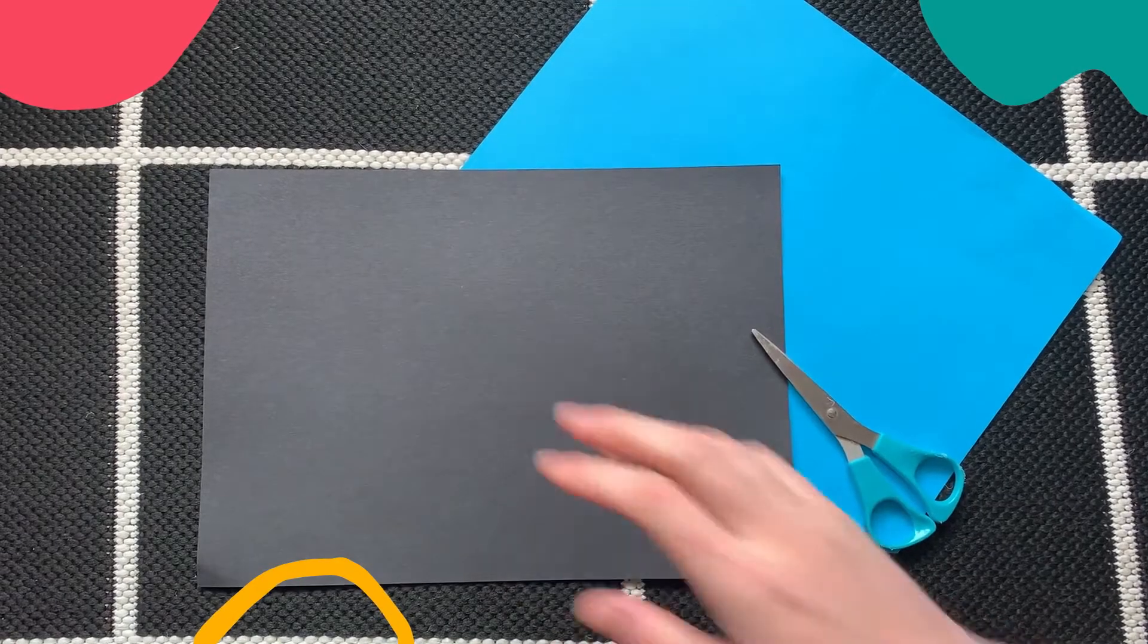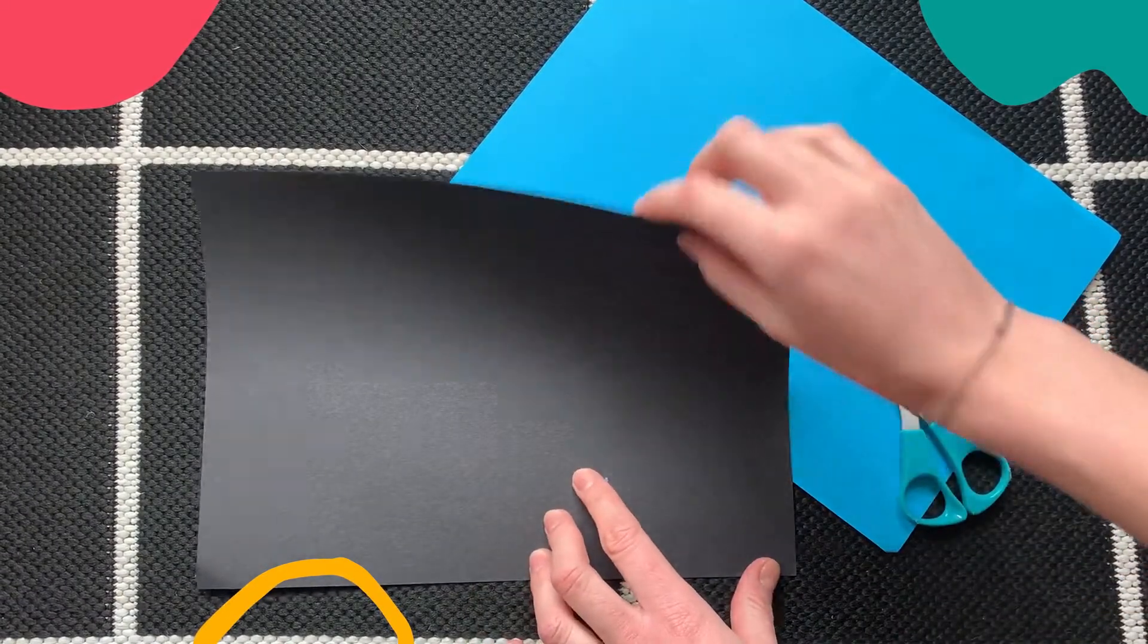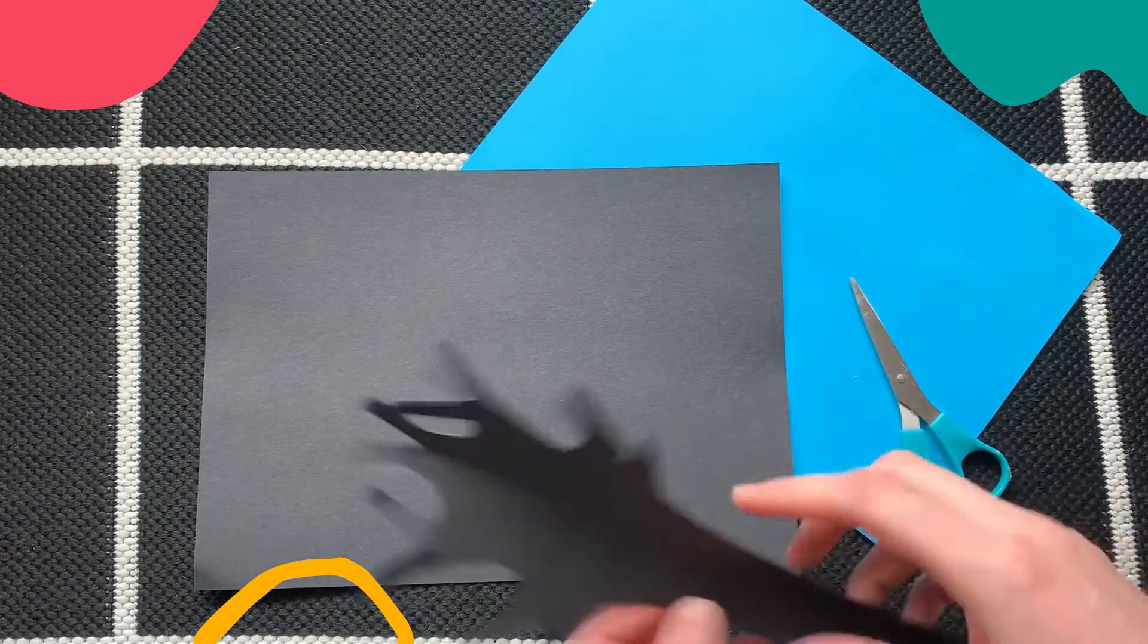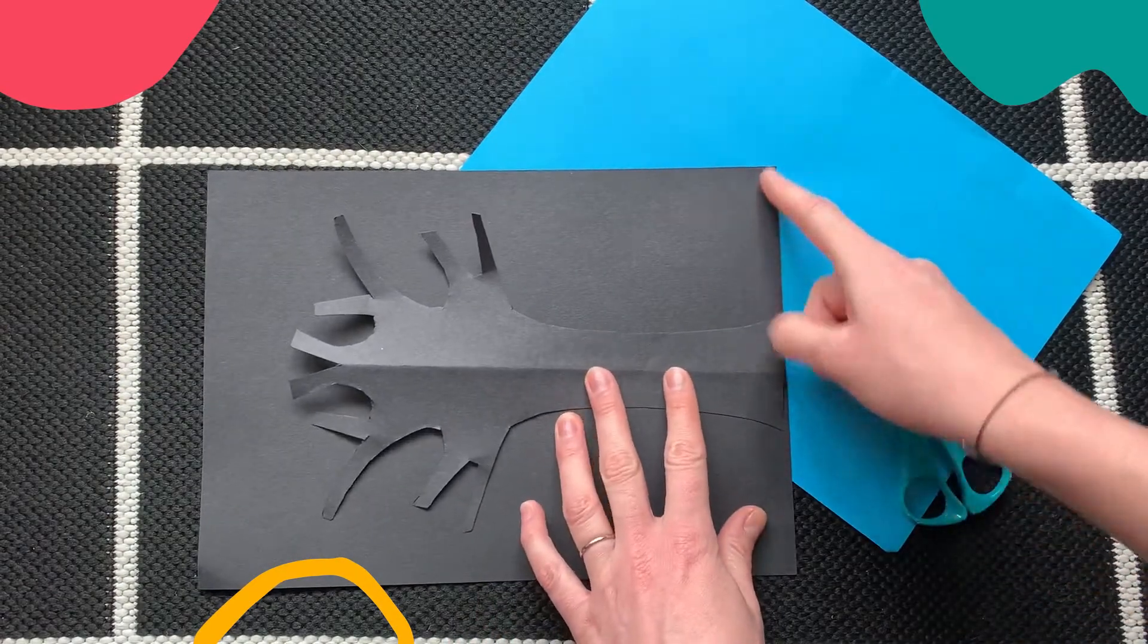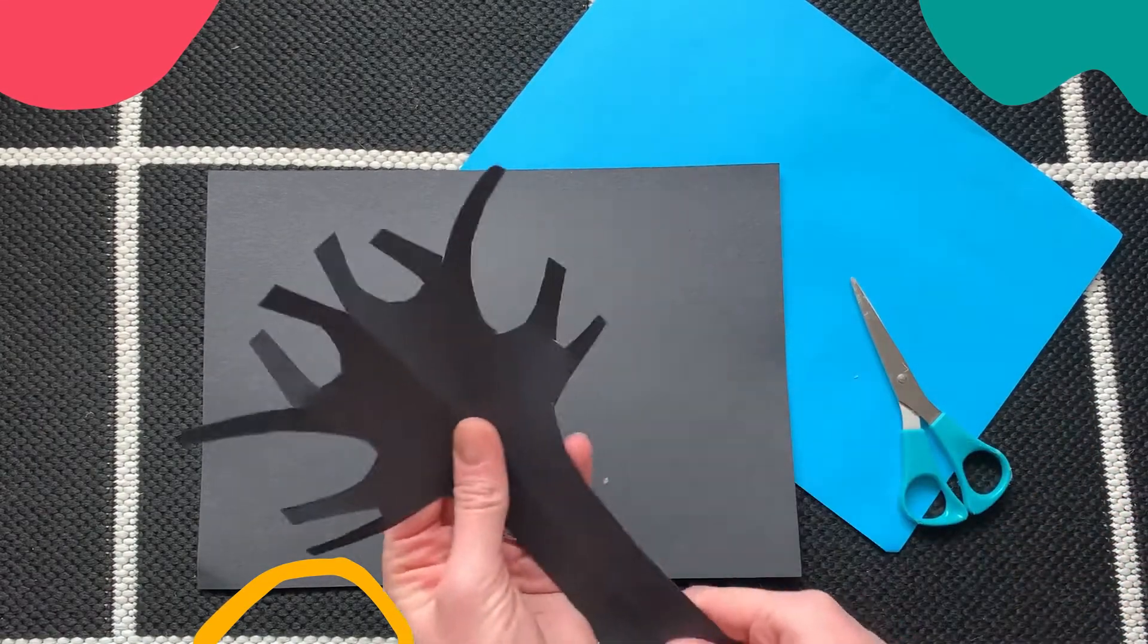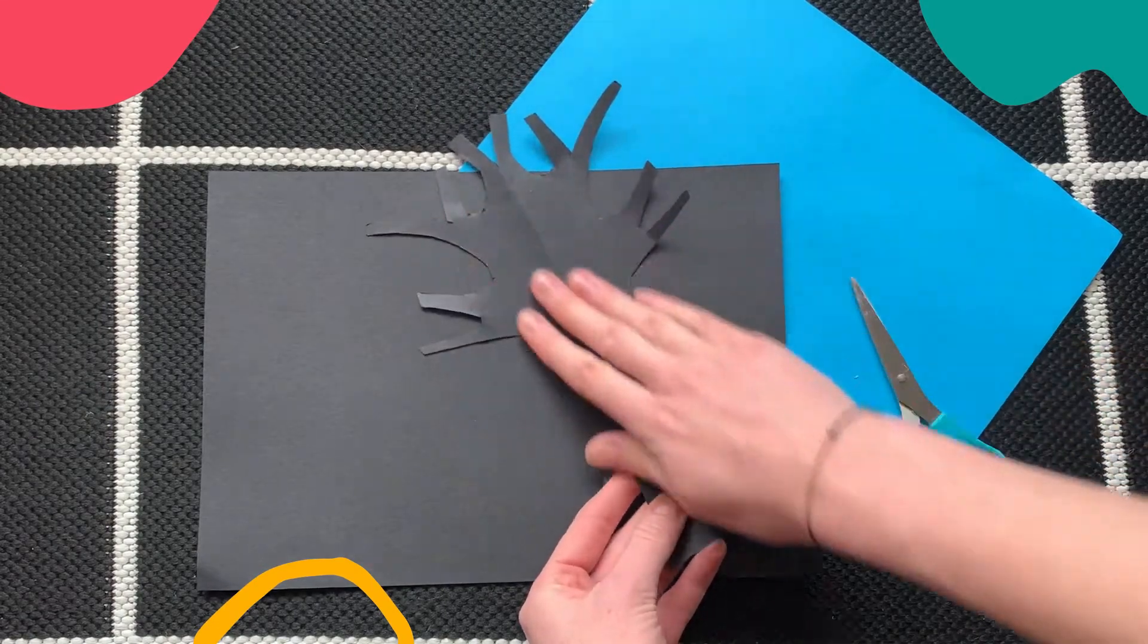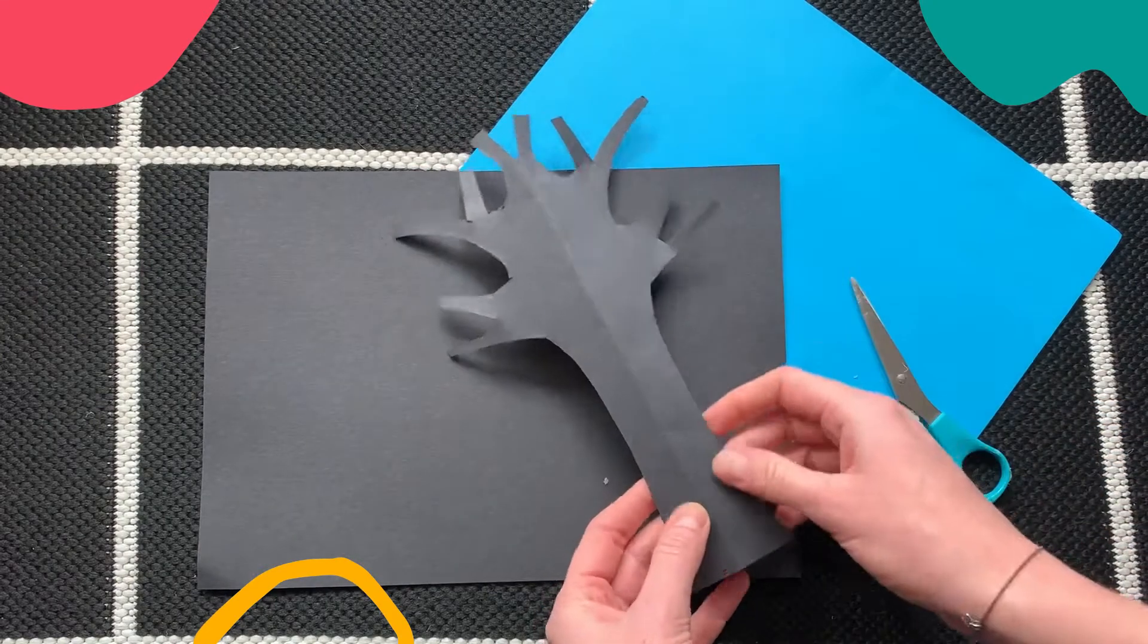With your black piece of paper, you need to fold it in half all the way down the middle and then cut out a tree shape. Then open it back up and you've got your silhouette shape of the tree which you're going to stick your tissue paper around the edge of.